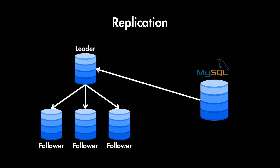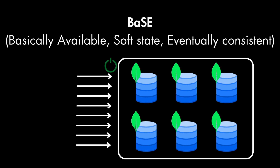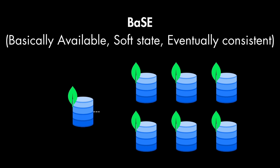Non-relational databases drop the ACID properties, but they have their own model called the BASE model, which stands for Basically Available, Soft state, and Eventual consistency. This means the system prioritizes availability for reads and writes even during network partitions or node failures. The eventual consistency part means that data changes might not be instantly reflected across all replicas, but the system will eventually converge to a consistent state — and this trade-off is what allows for greater scalability.